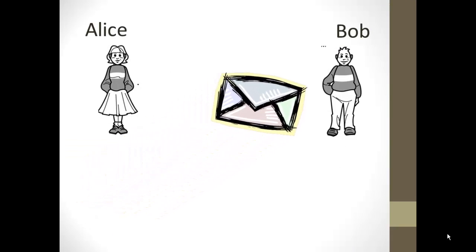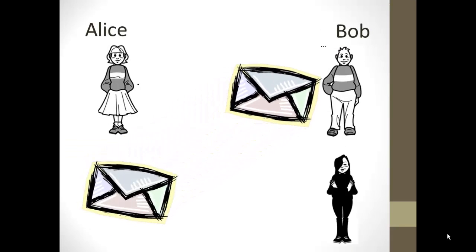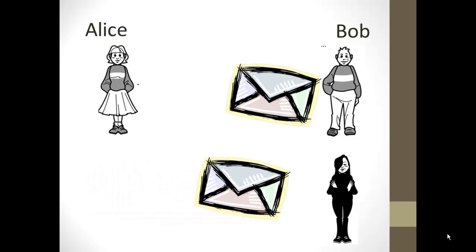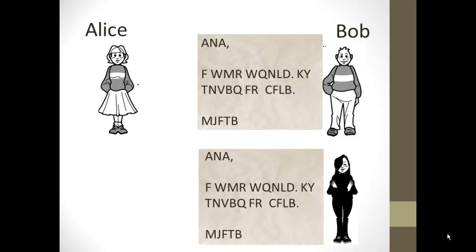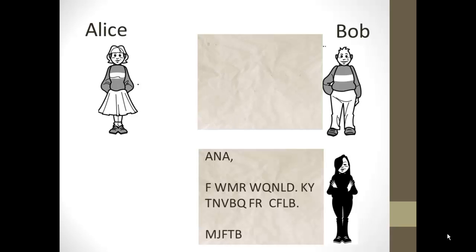You always have to remember that your enemy can intercept the message and also read it. So now they both have a copy of the message, they both open it up, and they both see the illegible message. Now Bob, knowing the key, can decrypt it and get her message.